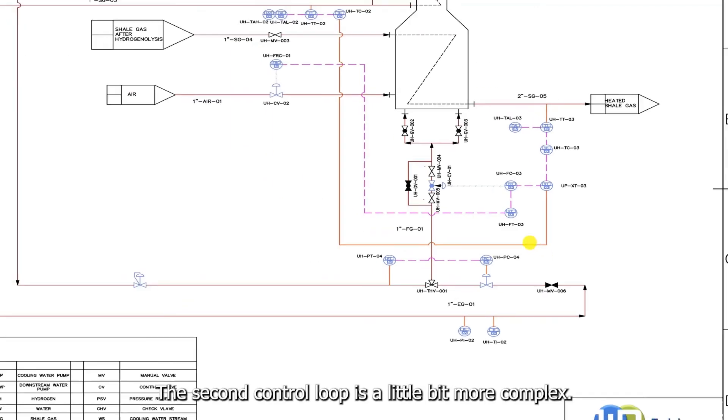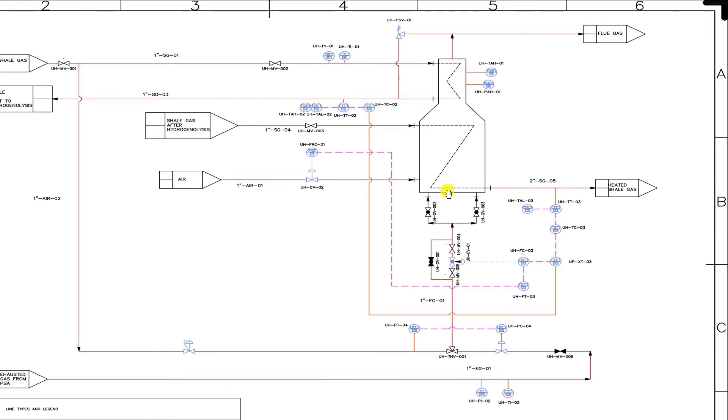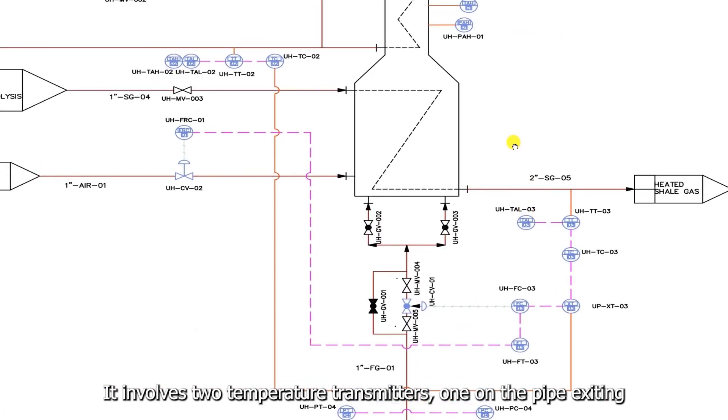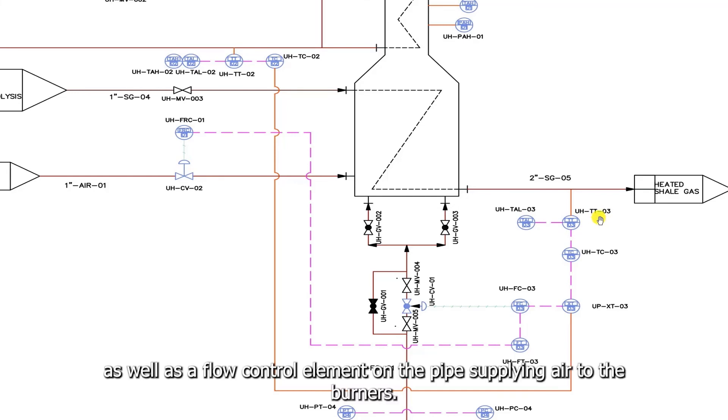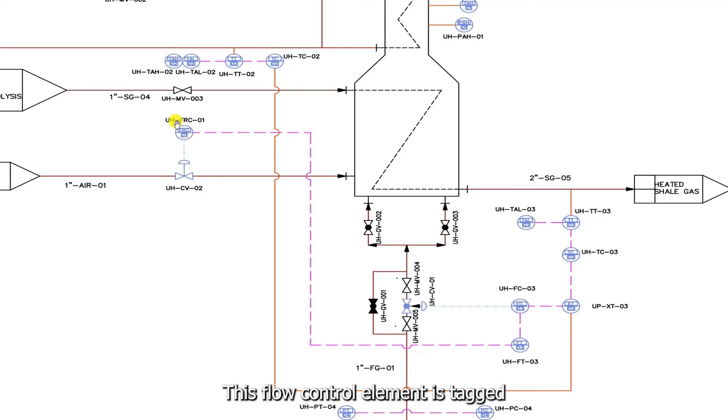The second control loop is a little bit more complex. It involves two temperature transmitters, one on the pipe exiting the convection zone, tag TT-02, and another on the pipe exiting the radiation zone, tag TT-03. As well as a flow control element on the pipes supplying air to the burners. This flow control element is tagged FRC-01. Recall, FRC stands for Flow Recording Controller.